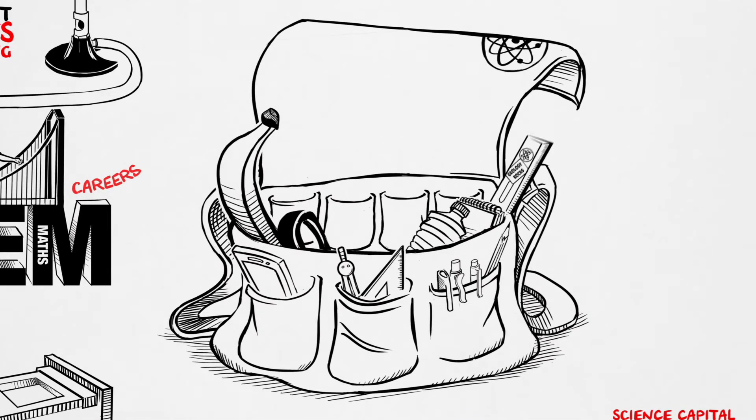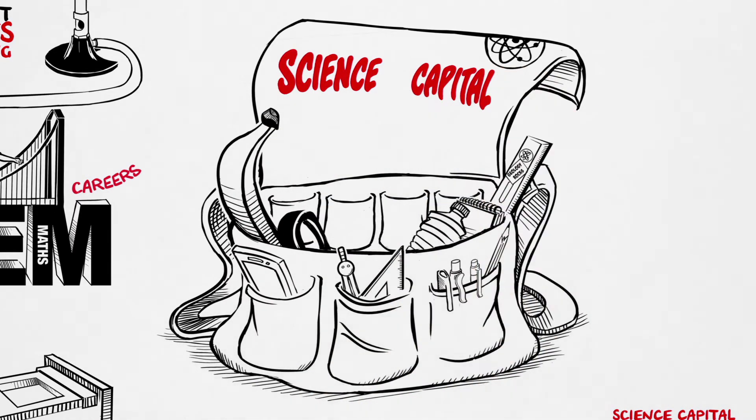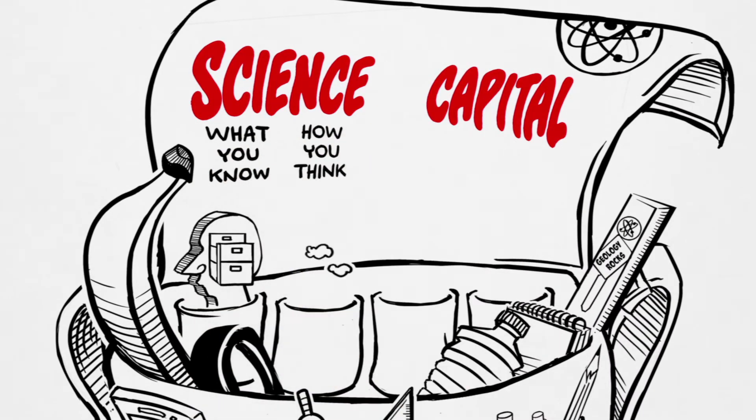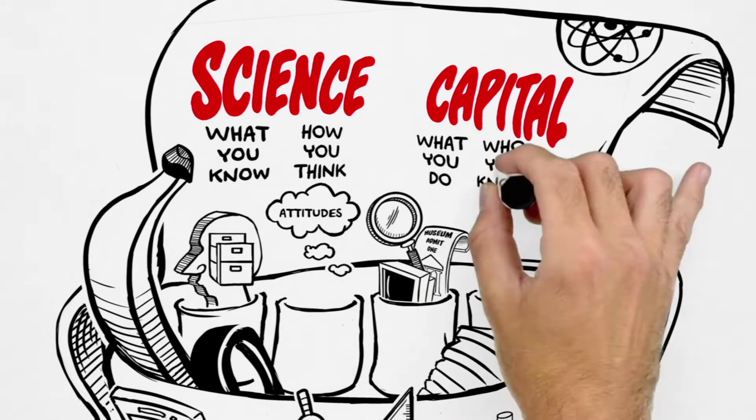The science capital each person has splits into four main types: what you know, how you think, what you do and who you know.